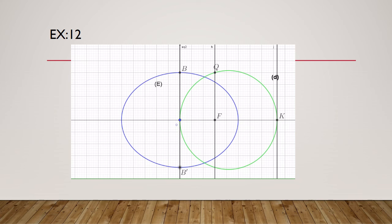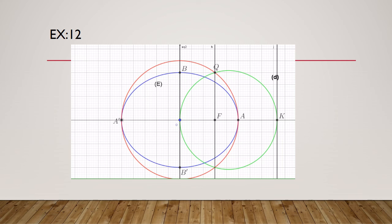To construct vertex A: we have center O and point Q, which lies on the auxiliary circle. So we draw the auxiliary circle of center O and radius OQ. This auxiliary circle cuts the focal axis at points A and A'. For the second directrix D', it can be obtained by symmetry.